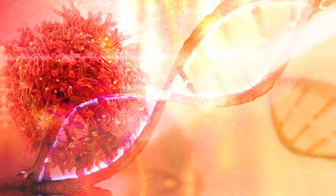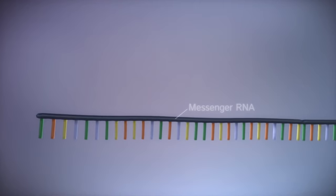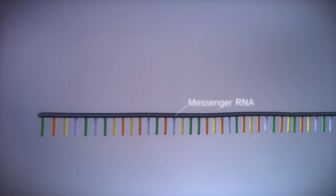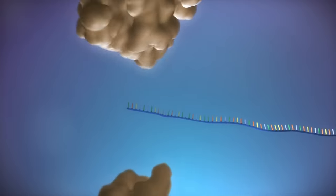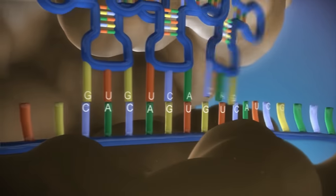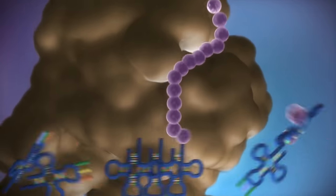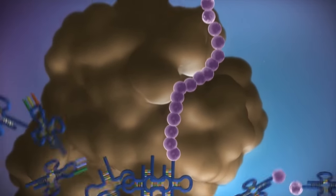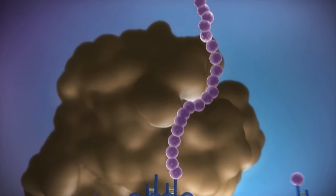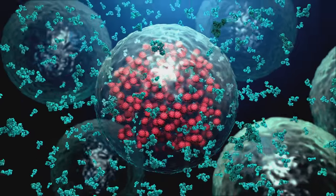New vaccines work in a very different way by delivering messenger RNA instead of bits of viruses. The messenger RNA, or mRNA, instructs the body to make the same protein that would host the virus — only without the actual virus. This then triggers the immune system to respond and create defenses.